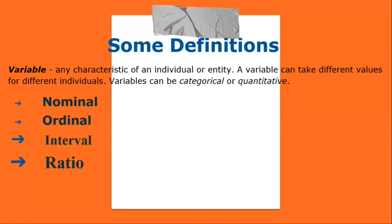Distribution of a variable tells us what values the variable takes and how often it takes these values. Unimodal means having a single peak; bimodal means having two distinct peaks; symmetric means the left and right halves are mirror images.